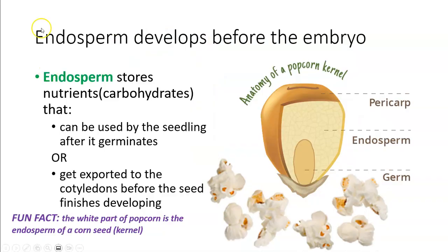Starting with the endosperm: endosperm develops before the embryo. It comes from the fertilization of the second sperm with the polar nuclei found in the ovule. Its purpose is to store nutrients in the form of carbohydrates from the parental female plant — carbohydrates from extra food produced by photosynthesis. The endosperm can be used by the seedling after it germinates, or it can be used while the seed is still developing.